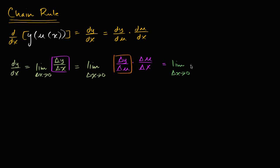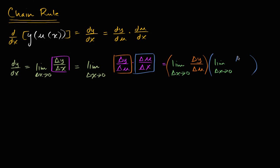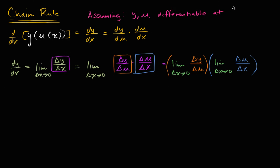And I'll color code it — of delta y over delta u, times the limit as delta x approaches zero of delta u over delta x. So what does this simplify to? Well, this right over here is the definition, and we're assuming — in order for this to even be true — we have to assume that u and y are differentiable at x. So we're assuming y and u are differentiable at x.